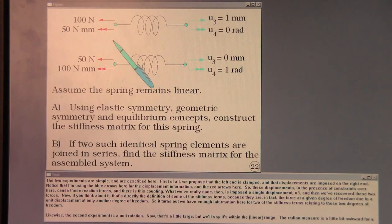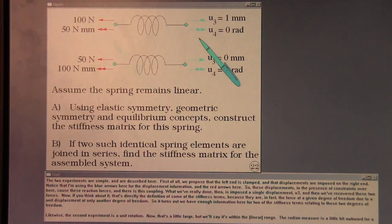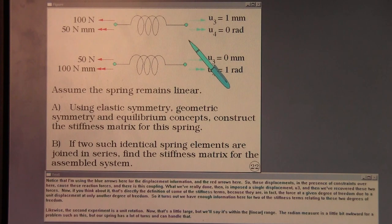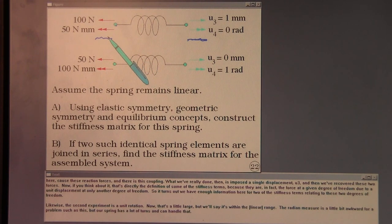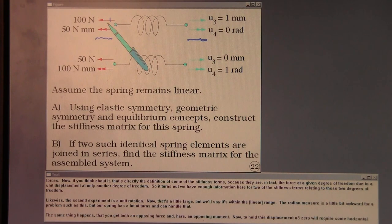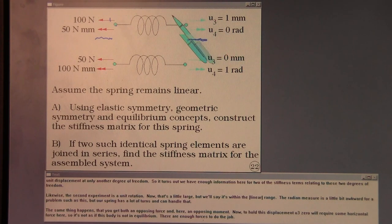The two experiments are simple and are described here. First of all, we propose that the left end is clamped and that displacements are imposed on the right end. Notice that I'm using the blue arrows here for the displacement information and the red arrows here. So these displacements in the presence of constraints over here cause these reaction forces. And there is this coupling that what we've really done is imposed a single displacement U3 and then we've recovered these two forces. Now, if you think about it, that's directly the definition of some of the stiffness terms because they are, in fact, the force at a given degree of freedom due to unit displacement at only another degree of freedom. So it turns out we have enough information right here for two of the stiffness terms relating to these two degrees of freedom.